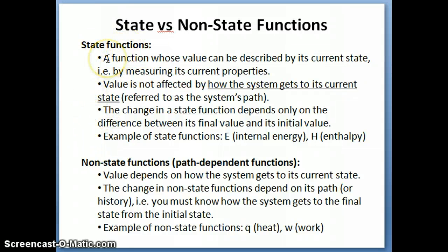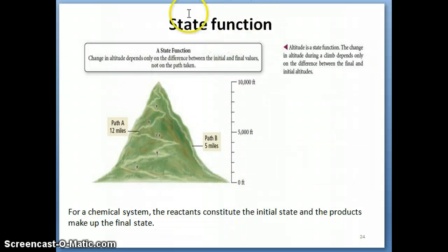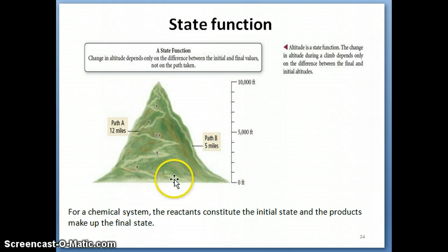State functions are basically functions or properties — thermodynamic properties like volume, energy, and so on — whose value doesn't depend on the path. So if I take five steps to get from my initial state to my final state, I get a certain value, and if I take two steps, I get the same value. That's what we refer to as a state function, analogous to the altitude property in our example.